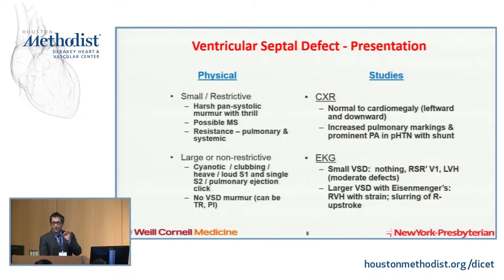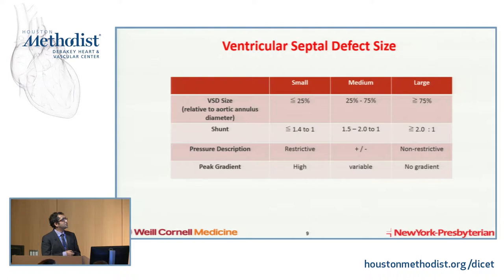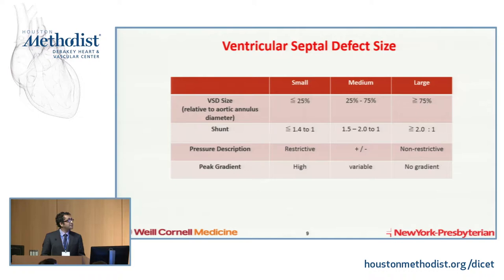Chest X-ray can range between normal and signs of right heart dilatation and pulmonary hypertension. EKG can show right ventricular hypertrophy and RV strain depending on severity. Between small and large, a lot of people give numbers in millimeters, but it depends on the size of the patient. We sometimes give the VSD size relative to the aortic annulus. We talk about shunts measured in the cath lab, on echo, and on MRI to define our VSDs. A very large non-restrictive VSD will have a large shunt with mixing, versus a small VSD is generally less than 1.4-to-1 QP/QS.